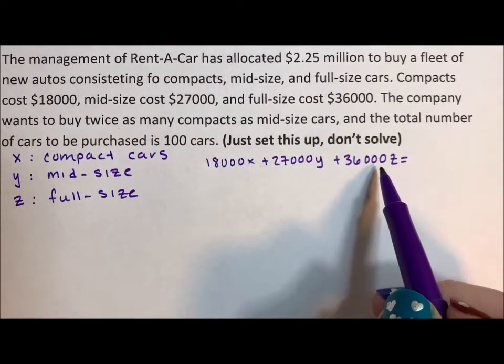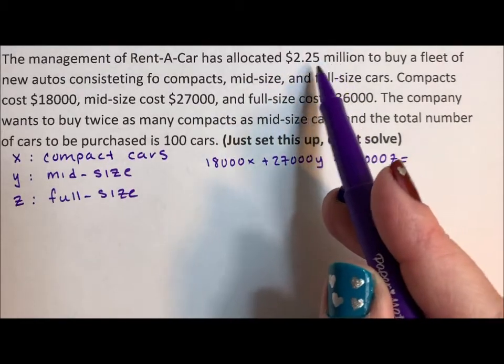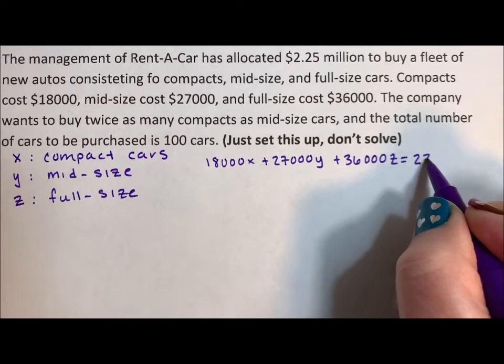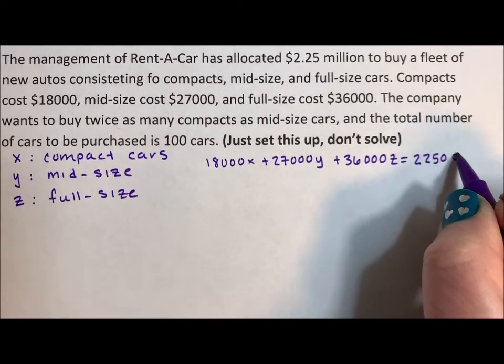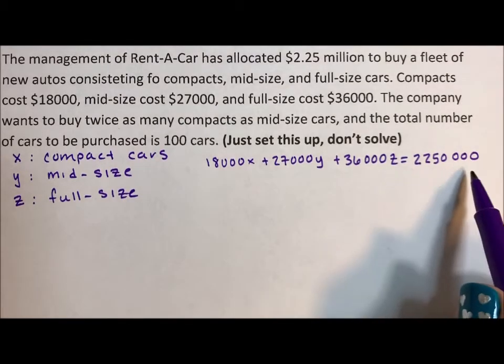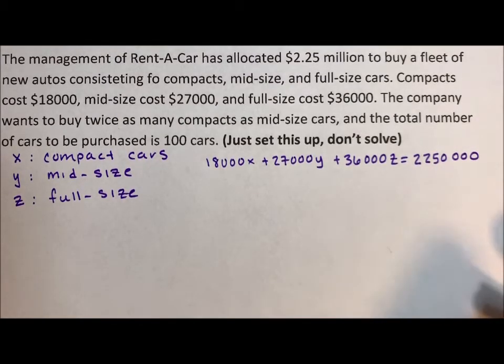Notice all of these are expanded numbers. We have to expand the 2.25 million. So 2,250,000. And so that's the thing you have to remember is this number also has to be expanded. So the first equation is our money.